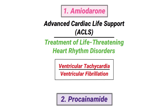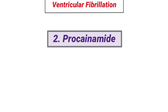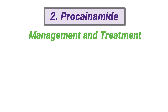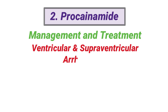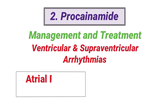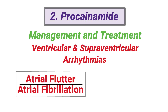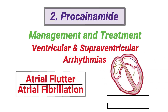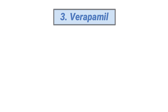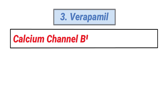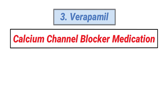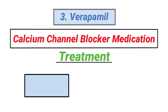Procainamide is a similar drug that is indicated for the management and treatment of both ventricular and supraventricular arrhythmias. This includes atrial flutter and atrial fibrillation. It is often administered in patients with Wolff-Parkinson-White syndrome as well. Next up is verapamil, which is a calcium channel blocker medication that is indicated for the treatment of supraventricular tachycardia.